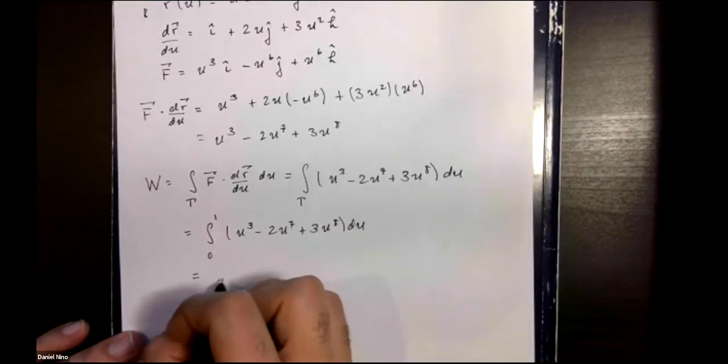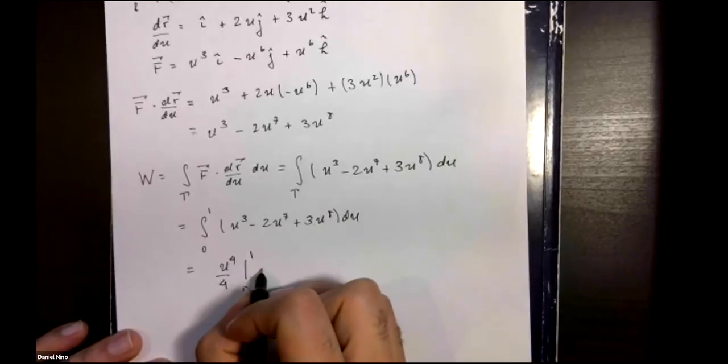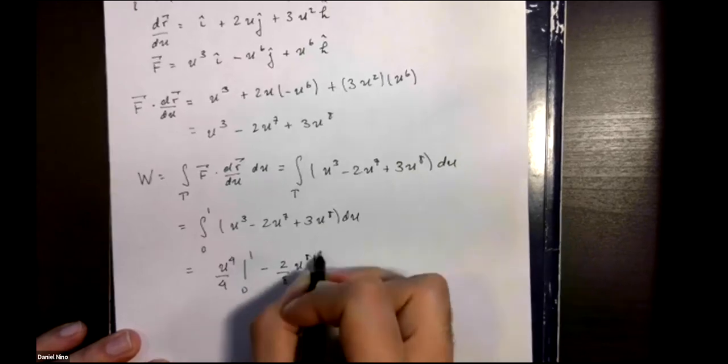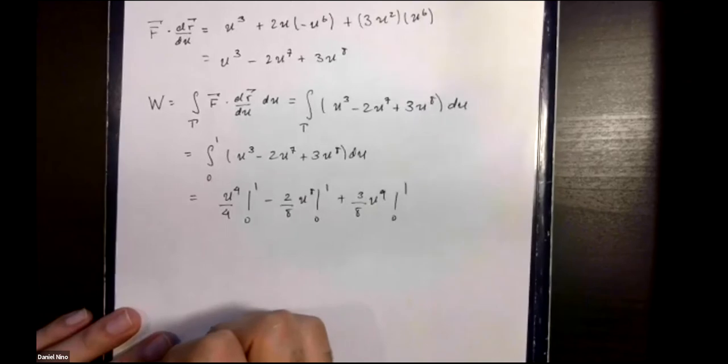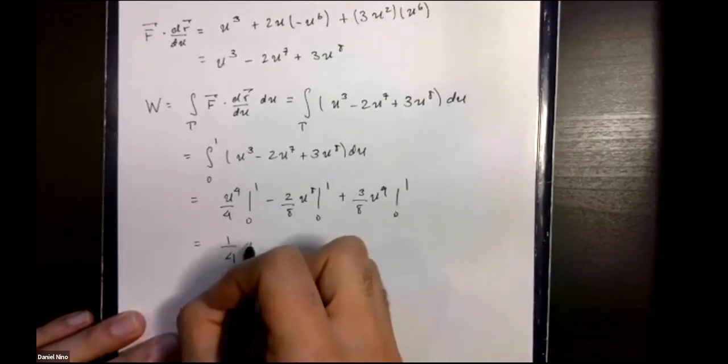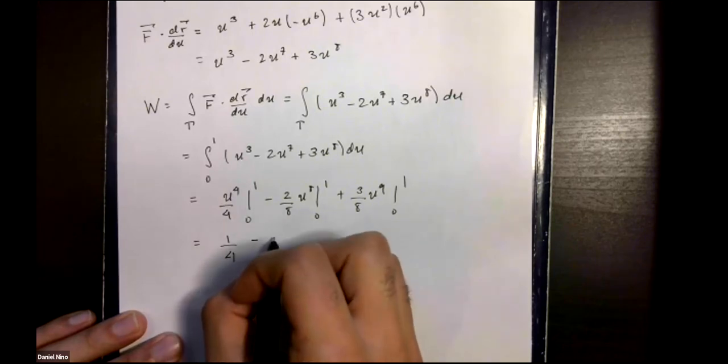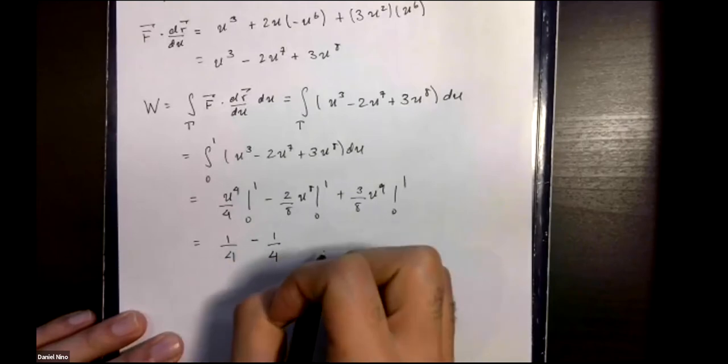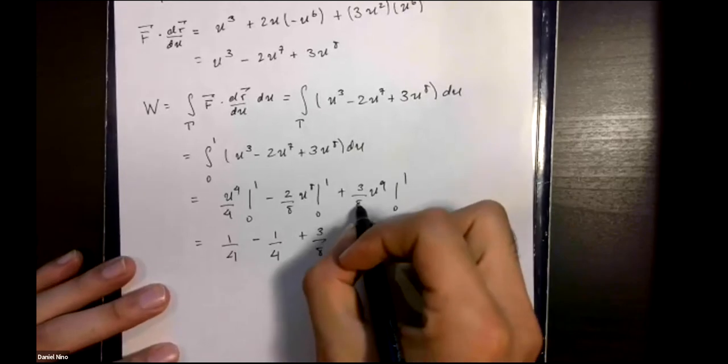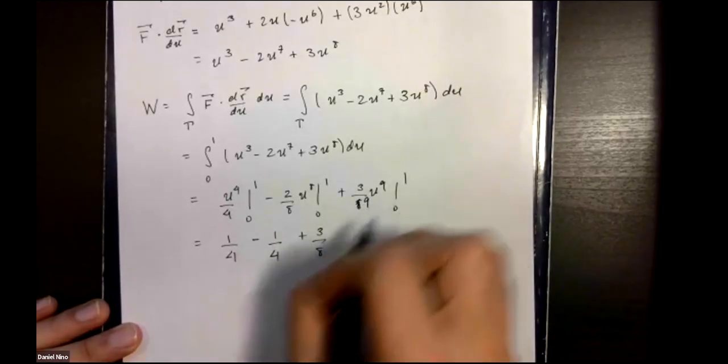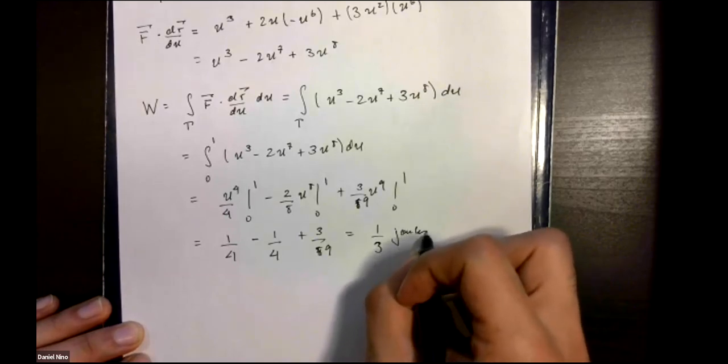Then just carry out these integrations. This one is u to the 4, 1 over 4 evaluated at your limits of integration. Evaluating the limits, you just get one quarter plus 3 to the 8, this should actually be 9, so you're left with one over third, one third, let's say joules as the unit of work.